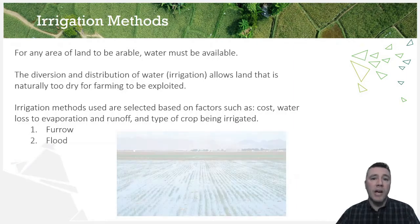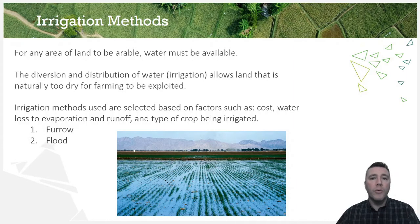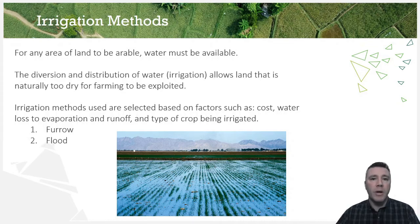Flood irrigation is exactly what it sounds like — water is released into the field and simply flows over the ground through the crop. Like furrow irrigation, it is relatively cheap but suffers from high evaporative water loss. A second drawback called waterlogging also exists, which we'll look at in just a moment. Rice and wheat crops are the most common crops to be flood irrigated.